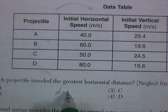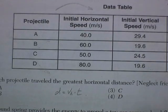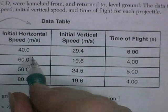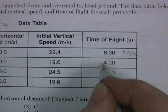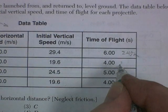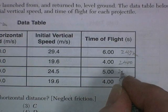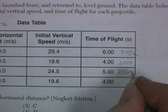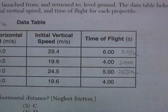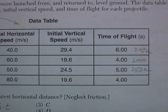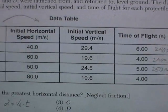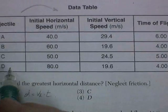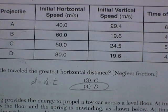Distance horizontal is going to be velocity horizontal times time of flight. 6 times 4 is 240 meters. 6 times 4, that's going to be the same. 5 times 5, 250 meters. And 8 times 4, that looks like the winner to me, boys and girls. Coming in at 320 meters is option D.